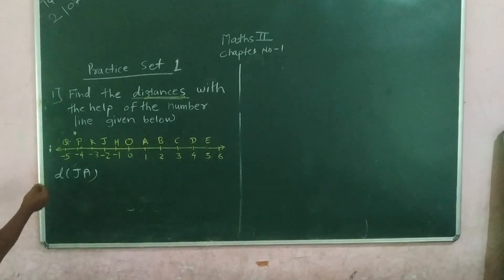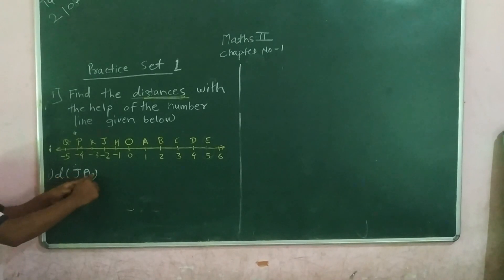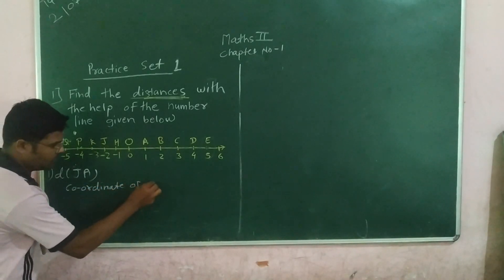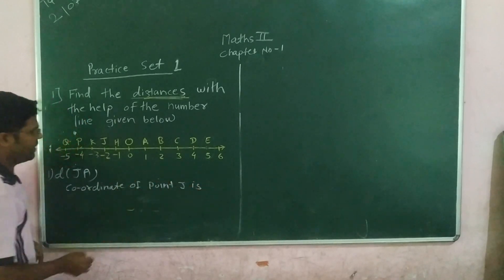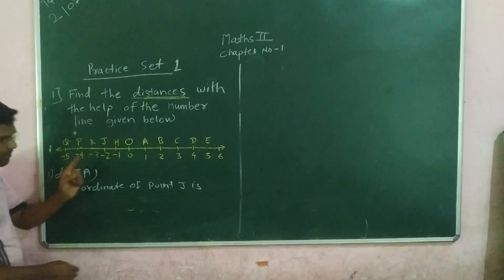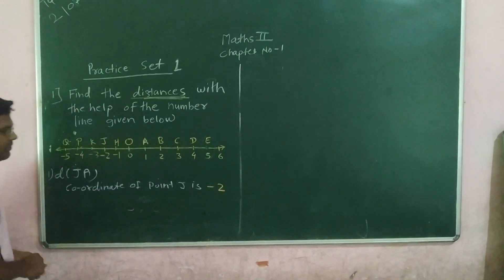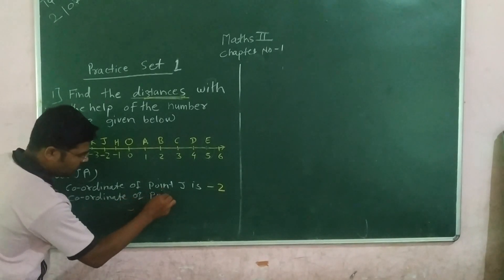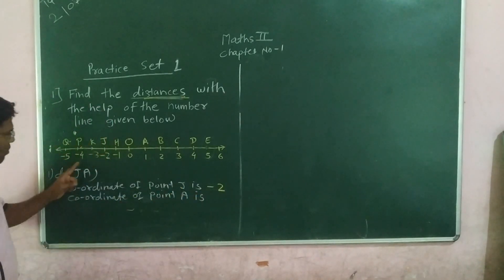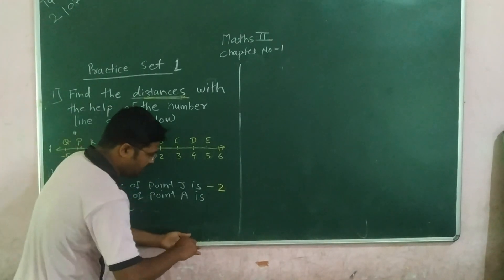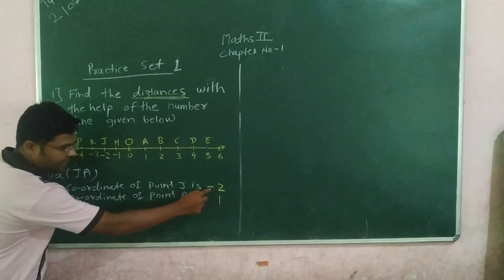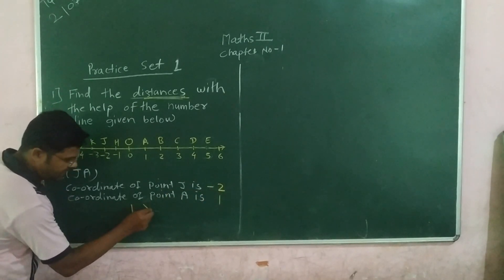The second sub-question is: find distance JA. Using the same method, first write the coordinate of point J, then the coordinate of point A. Point J is at negative 2, so write minus 2. Point A is at positive 1, so write 1. Now compare these two numbers: positive numbers are always greater than negative numbers, so 1 is greater than minus 2.